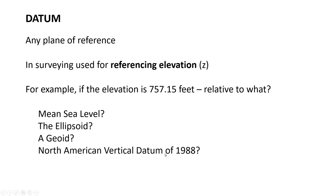The North American Vertical Datum of 1988 is a pretty common one. NAD 83 is a very common one you'll encounter. When we use the GPS system this week, you'll see we can set that up — when you start a survey you can tell it what datum you want to reference, and pick one of these datums. You also have to pick a geoid. That's why we want to learn about this before we go out in the field — a good GPS system will ask you these questions when you set it up.